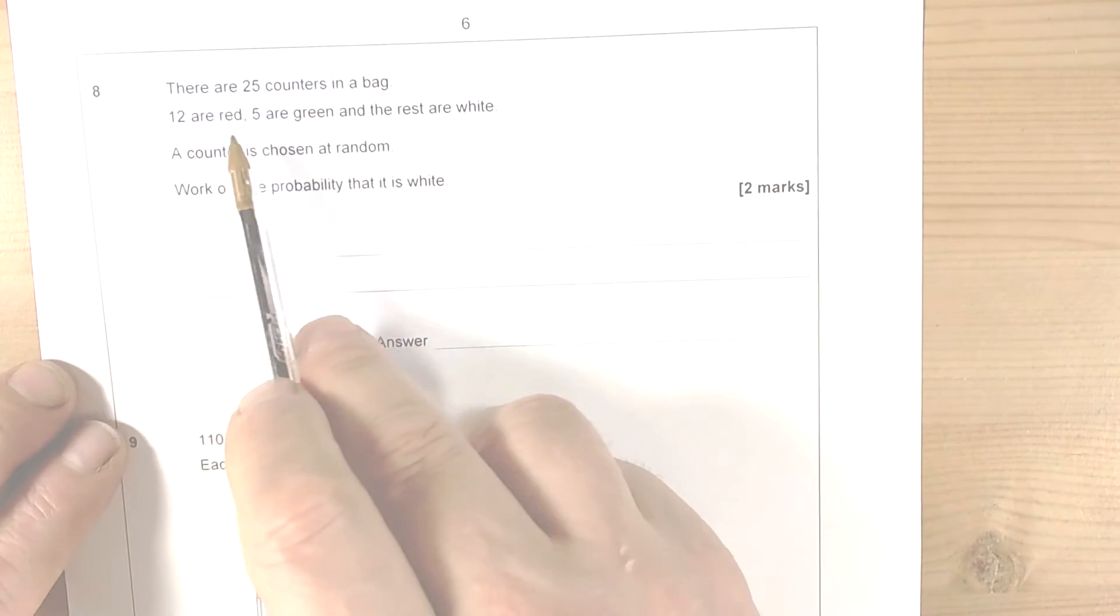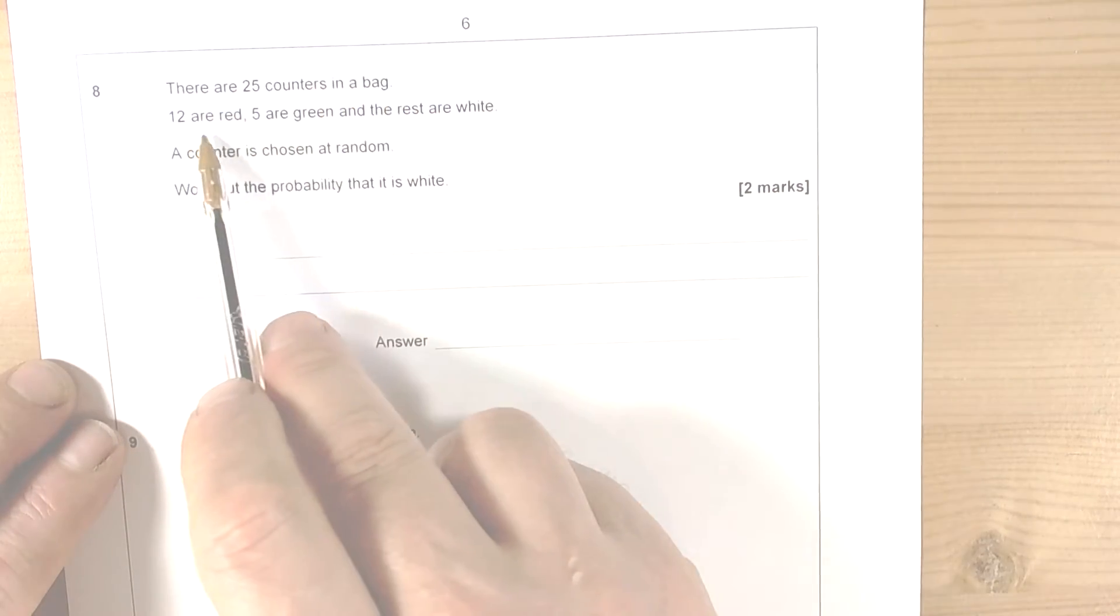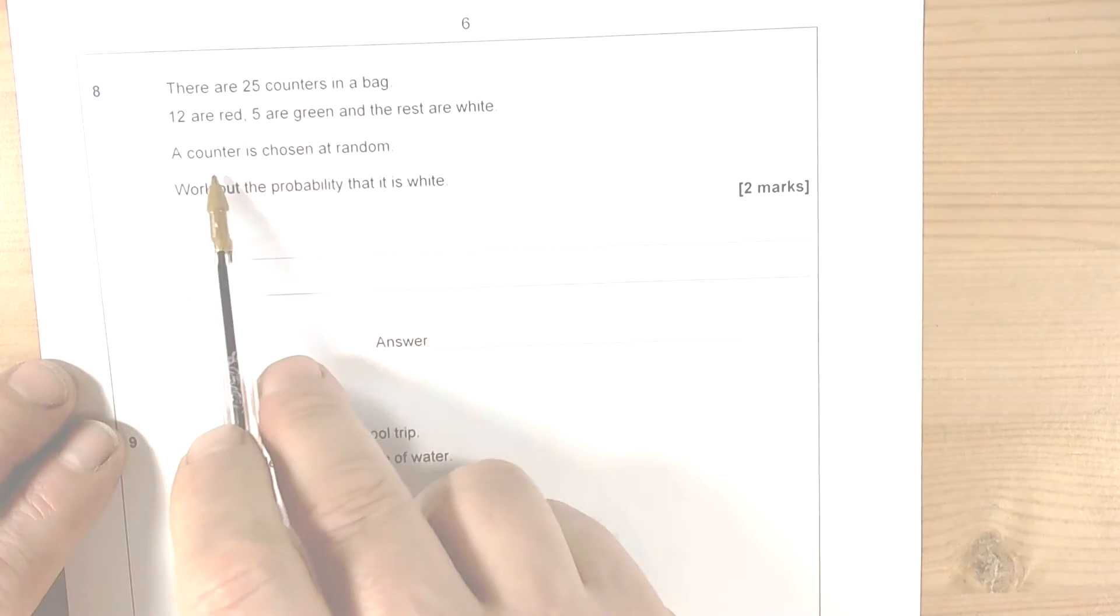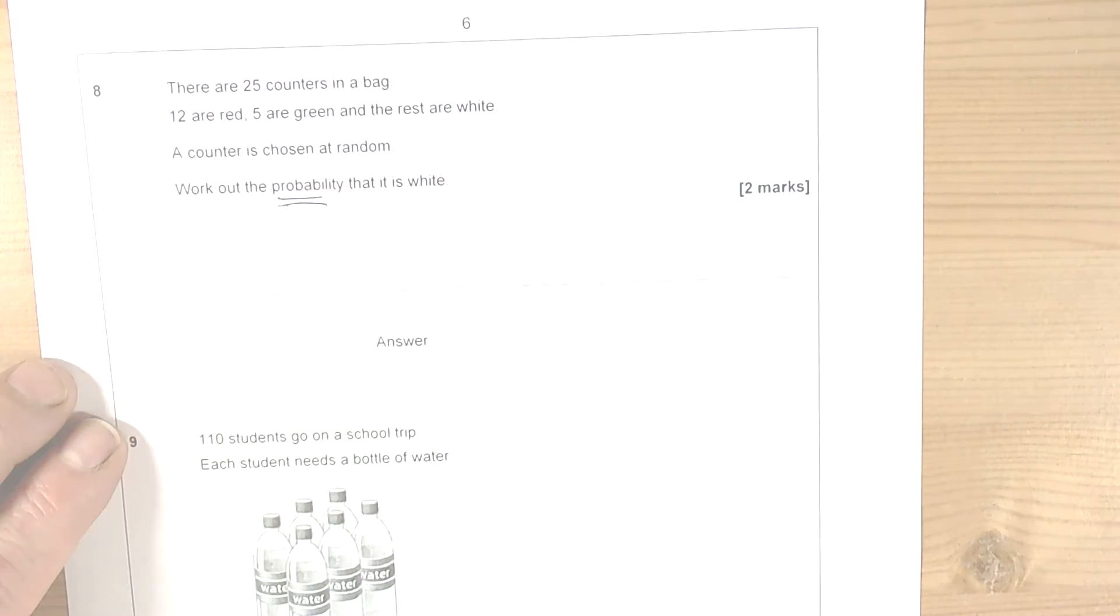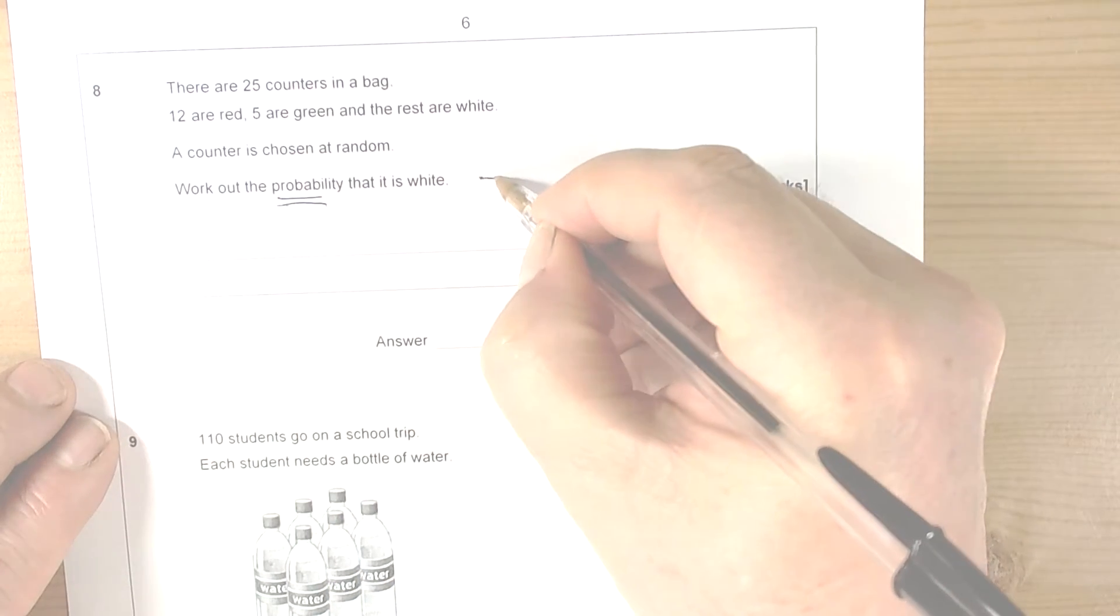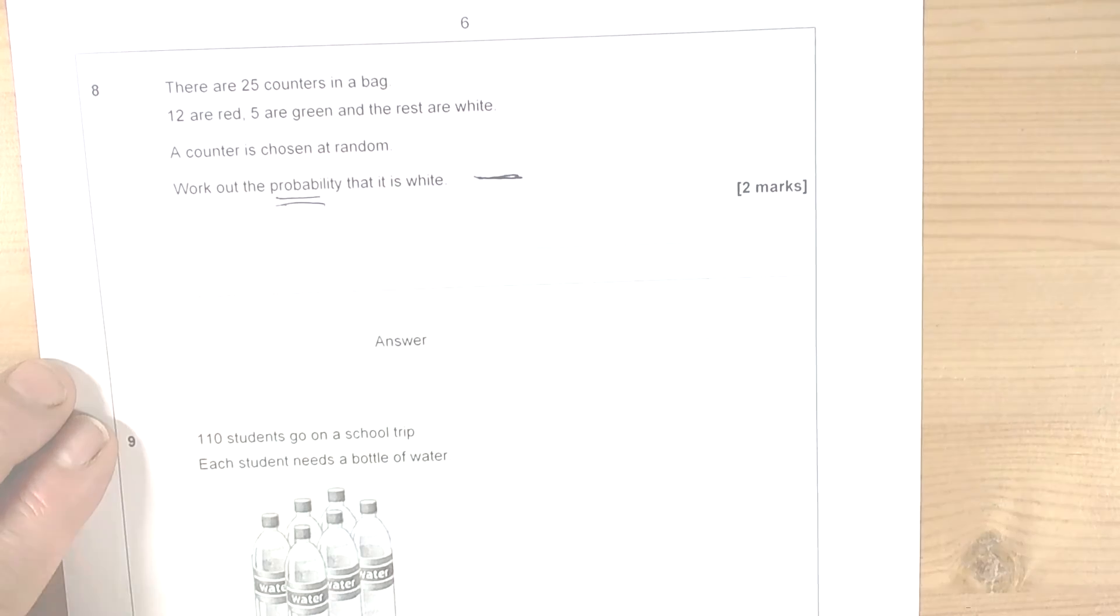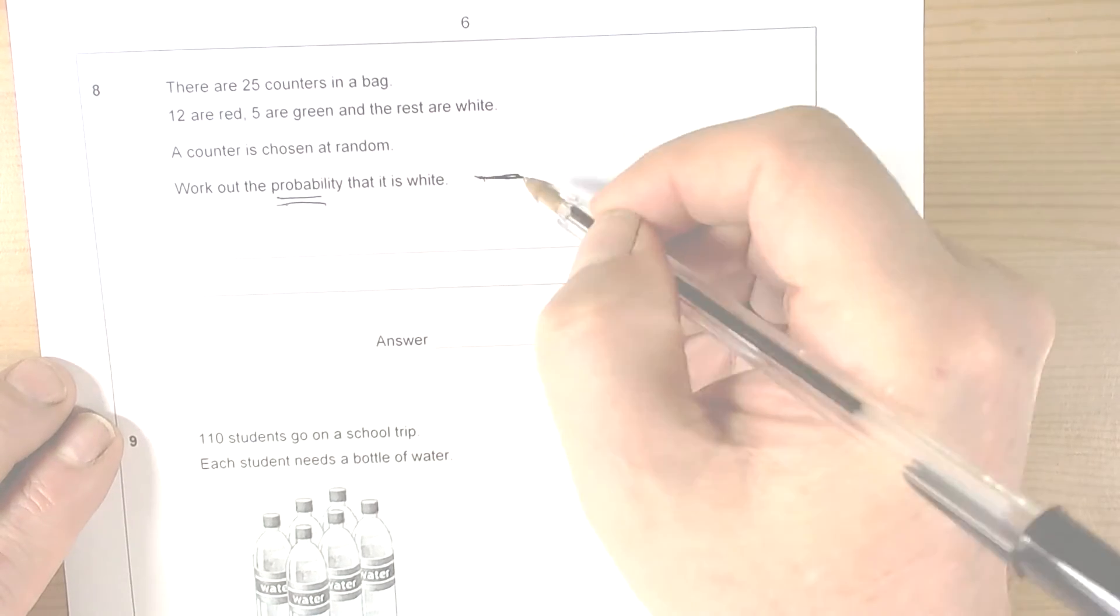Okay, so this question mentions counters in a bag. It's given us some information: 12 are red, 5 are green, the rest are white. A counter is chosen at random. We need to work out the probability, so we see that keyword probability. Quite often probabilities are nicely written as fractions, and they can be decimals or percentages, but when you've got questions involved in this kind of scenario it's easier to put the fraction.